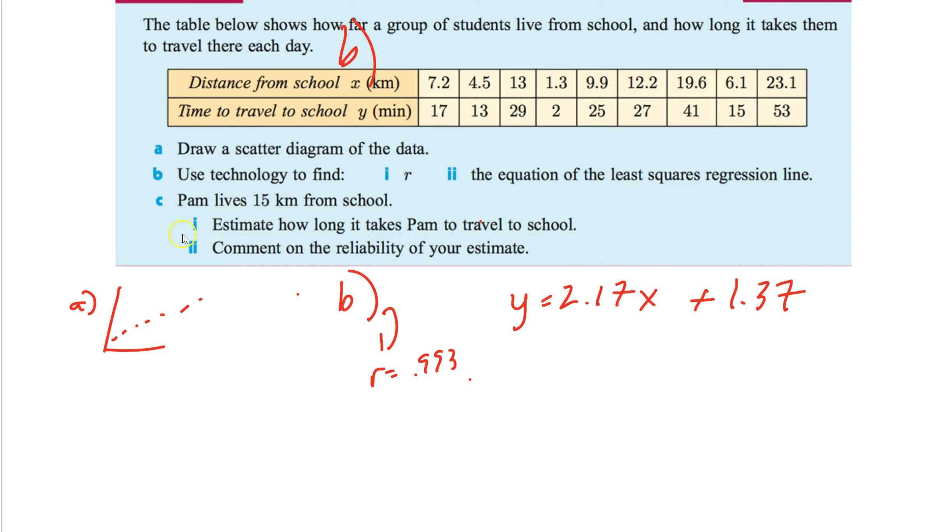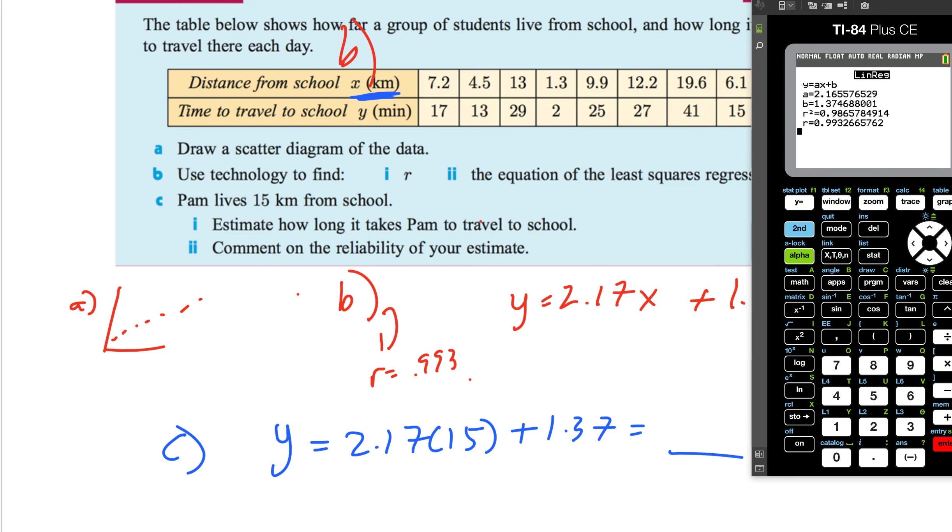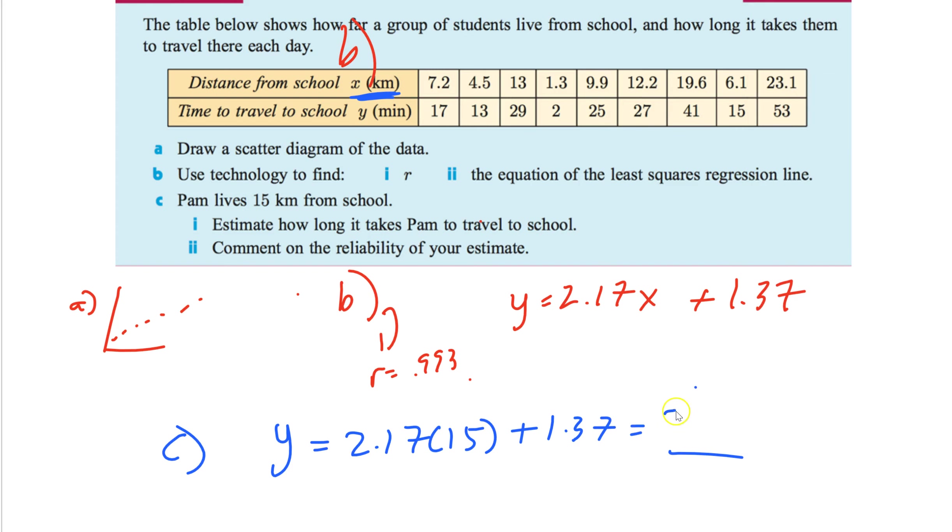Now C says. Pamela is 15 kilometers from school. Estimate how long it takes Pamela to travel to school. So okay. Think about this. She lives 15 kilometers. That's the x value. So we're going to plug that in for x. So I'm just going to go. Y equals 2.17 times 15 plus 1.37. Just use a calculator. Let's clear this. 2.17 times 15 plus 1.37. And I get 33.92. So it's going to take about 33 minutes. 34 minutes to get to school.